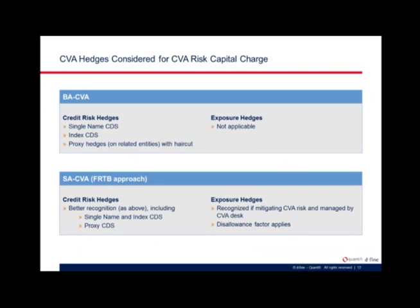Comparing both approaches concerning hedges: for the BACVA approach, only credit risk hedges are applicable, no exposure hedges, though proxy hedges are now accepted with a haircut compared to the current framework. For the SA-CVA approach, in addition to credit risk hedges, exposure hedges are also acceptable if they are recognized as mitigating and managed by the dedicated CVA desk. That was a short introduction — now handing over to Dmitri for the results.